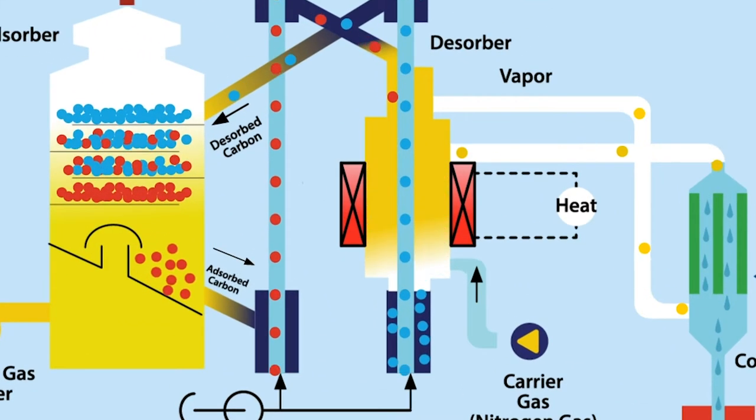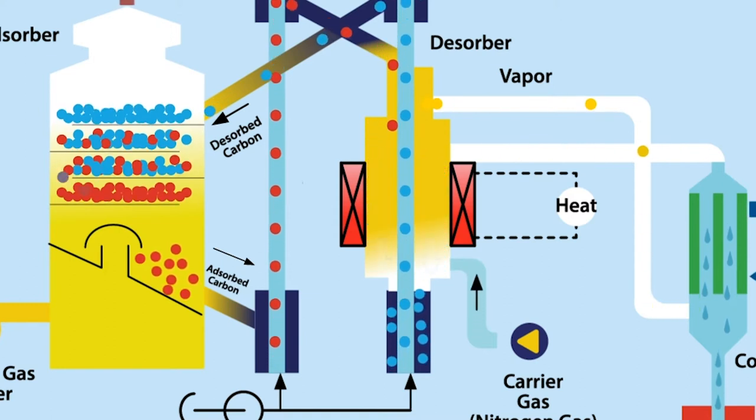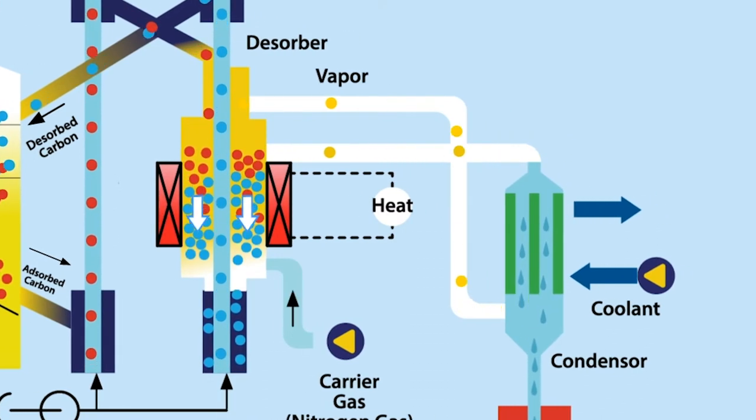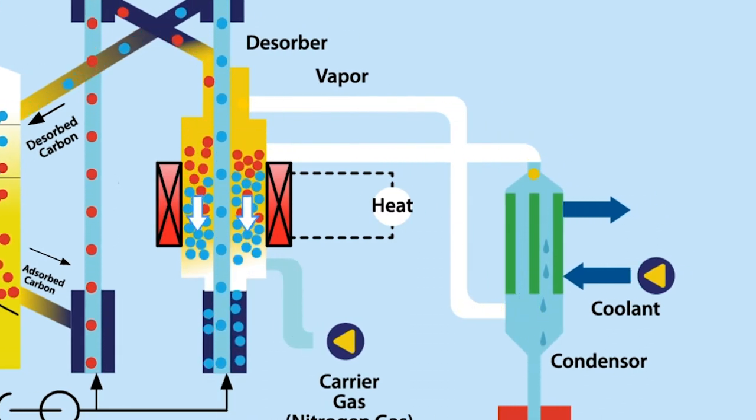In the desorber, the beads are heated to release the emissions. At the same time, nitrogen gas is moved across the carbon to sweep the emissions in vapor form to the condenser.